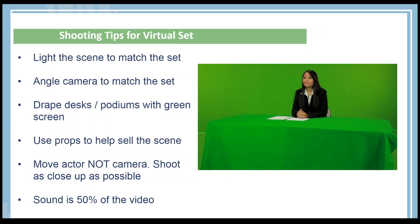When shooting a virtual set, the first tip is to light the scene to match the set. Think about what you want the final image to look like. For a sci-fi or industrial set, you'll probably want a darker, harsher look. For a newsroom, you want bright, even lighting. Think about that before you start shooting so the looks start blending together.